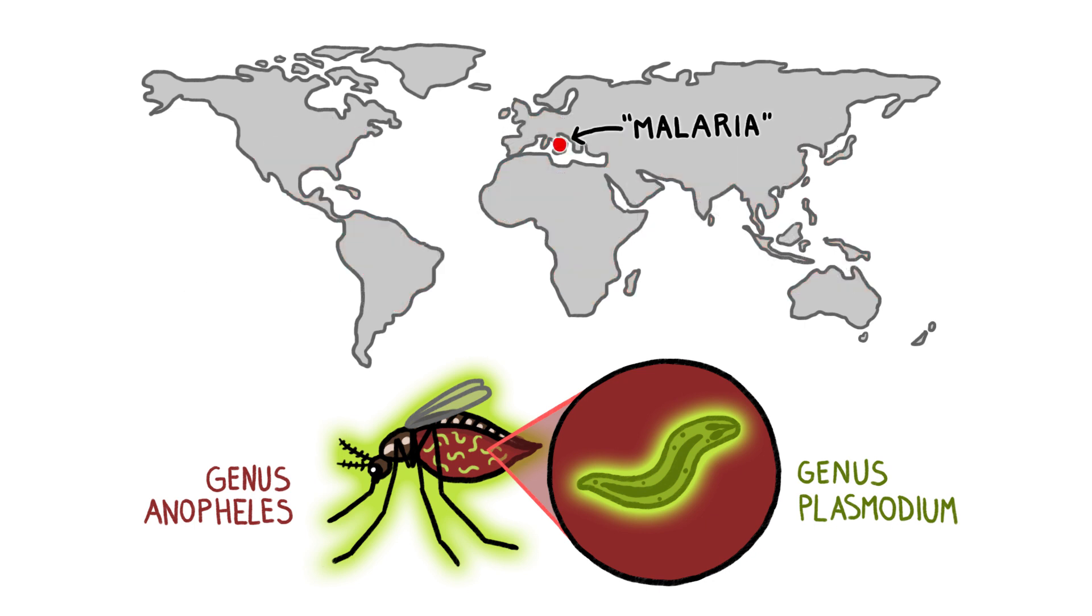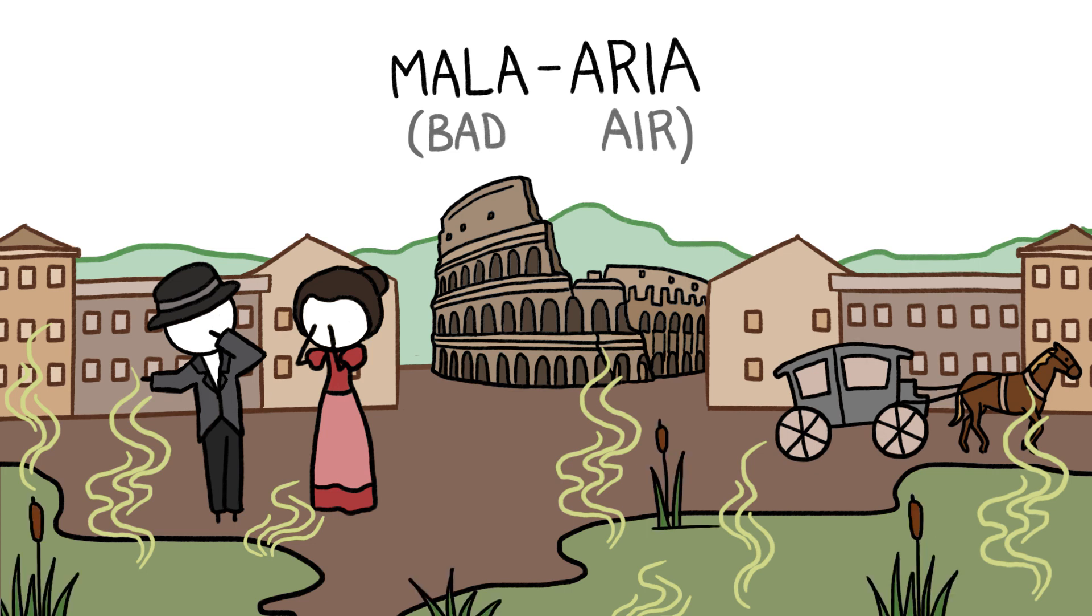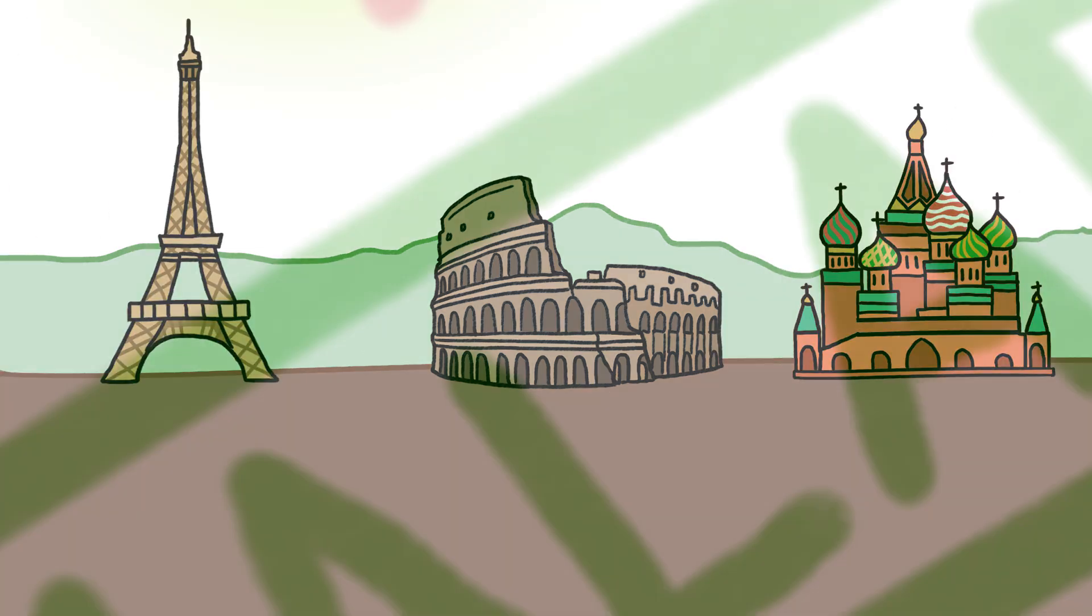In fact, the disease got its name relatively far from the tropics. Italians called it mala-aria, or bad air, because they thought it was caused by noxious fumes emanating from swamps. But Europe no longer has malaria.